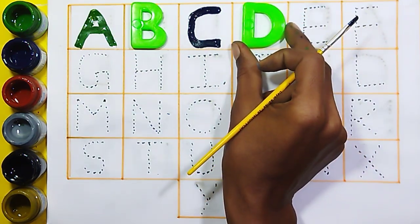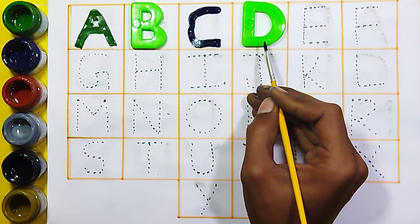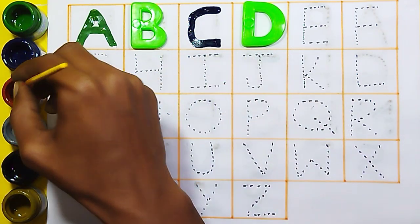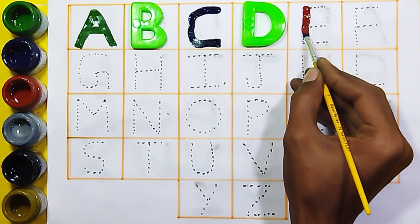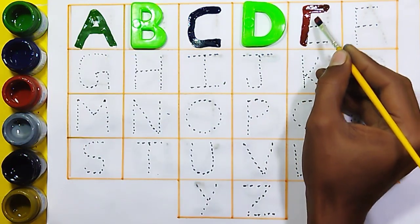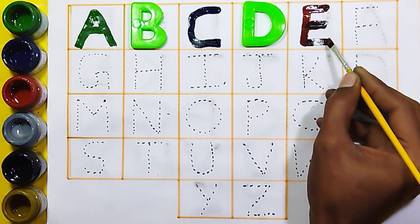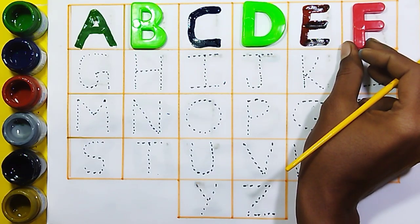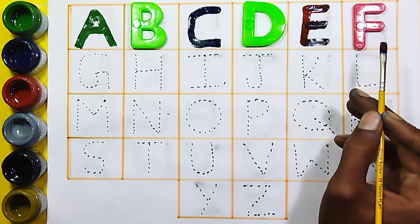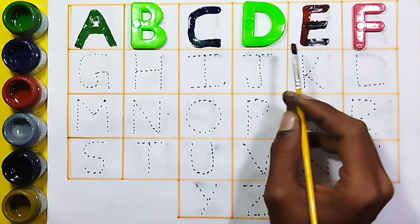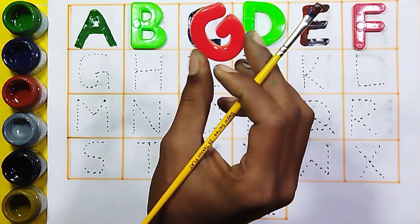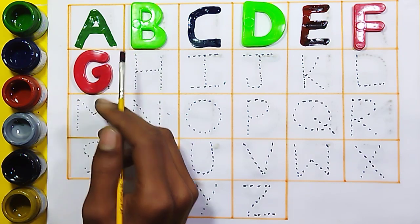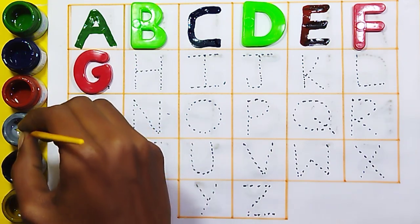D, D for dog. Red color E, E for elephant. Red color F, F for face. Red color G, G for grass. Gray color.